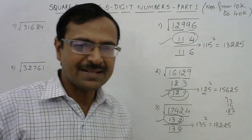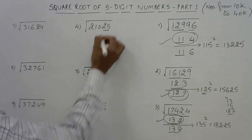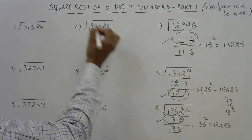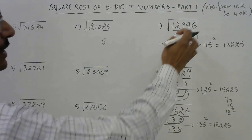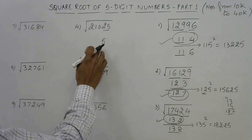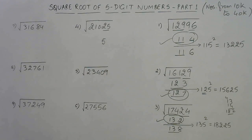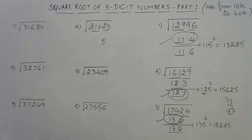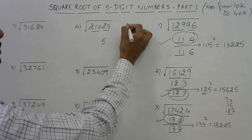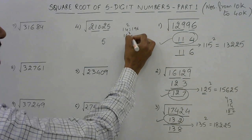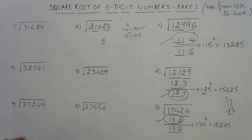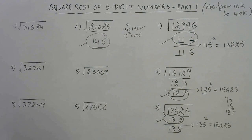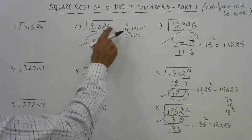Now a number ending with 5: for digits ending with 5, there is only one possible option — the answer also ends with 5. So the answer comes out directly. The triplet is 210: 14² = 196 is just below 210 (15² = 225 is above), so 14 is the remaining part, giving the answer 145. Numbers ending with 5 can be solved orally in one step.